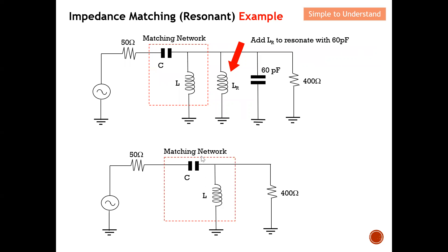Since we need a high-pass filter, remember that the series element must be a capacitor (C) and the shunt element must be an inductor (L). Please refer to the playlist for more explanation on why this configuration is required. Also, remember the gun analogy: the circuit looks like a gun, and the gun head always points toward the smaller resistance. Here, 50 ohms is smaller than 400 ohms, so the series element points toward 50 ohms and the shunt component is on the other side.